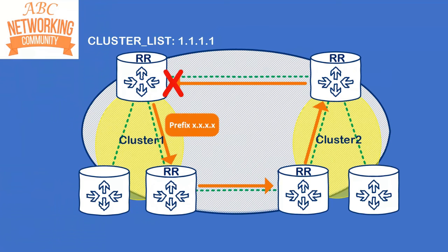Here's an illustration: with two different clusters and route reflectors configured, cluster 1 originates a prefix which goes to cluster 2 but then gets reflected back into cluster 1, where it will be dropped because cluster 1's cluster ID is already part of the BGP update. The route reflector sees that and drops it.